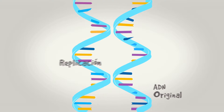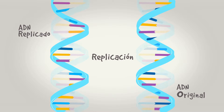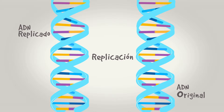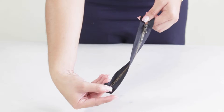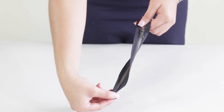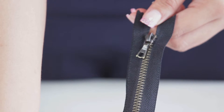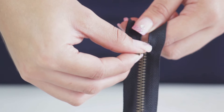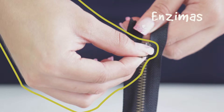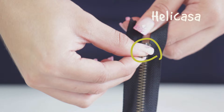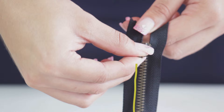En la replicación, se hacen dos copias a partir de una molécula de ADN, donde se transmite la información genética a otra generación. Si bien es cierto que la replicación es muy compleja, puede explicarse sencillamente de forma general utilizando un zíper. Si se enrolla sobre sí mismo, como se observa, se obtiene un modelo sencillo de la doble hélice del ADN. Al desenrollarlo, la mano representa las enzimas que desdoblan la molécula. Luego, el carro del zíper simula la helicasa, enzima que rompe los puentes de hidrógeno que unen a los nucleótidos, que en este ejemplo son los dientes del zíper.